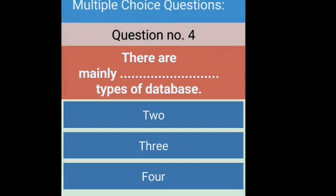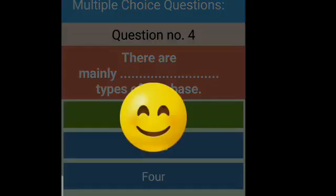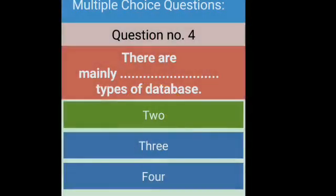Fourth question: there are mainly dash types of database. As we know, there are two kinds of database — first is flat file database and second is relational database. Right answer.